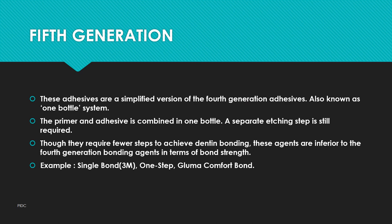Fifth generation adhesives are a simplified version of the fourth generation, also known as the one-bottle system — the primer and adhesive are combined in one bottle. A separate etching step is still required. Though they require fewer steps, these agents are inferior to fourth generation in bond strength. The difference is that in the fourth generation you perform etching, priming, and adhesive application separately; here primer and adhesive are combined. Example: Single Bond.